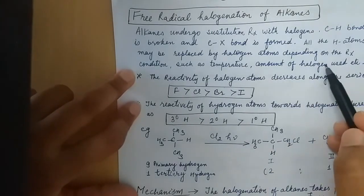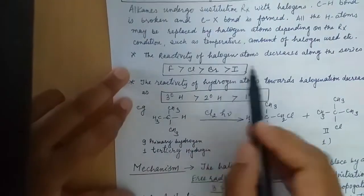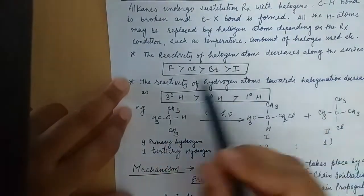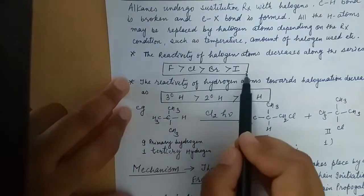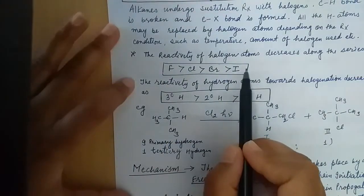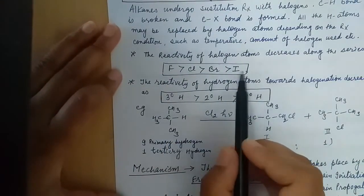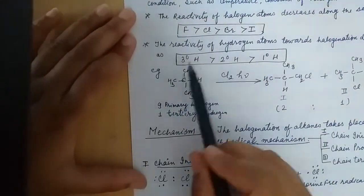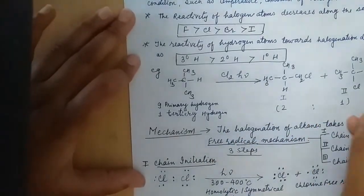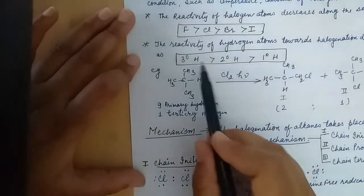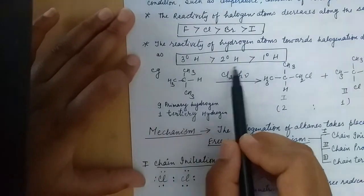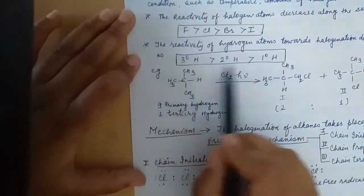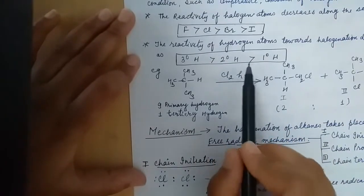The reactivity of the halogen atom decreases along the series. If we look at the ordered halogen reactivity for the free radical halogenation of alkanes, this is the order which is followed by the hydrogen atom for replacement in the free radical mechanism.